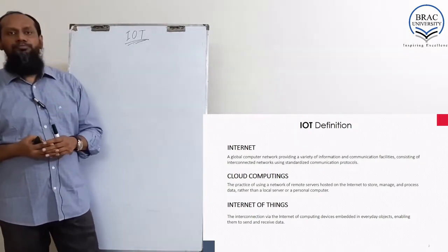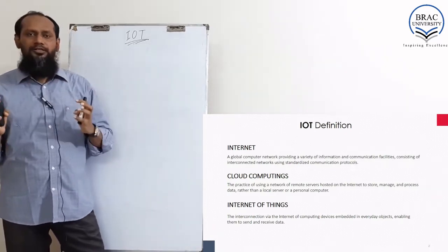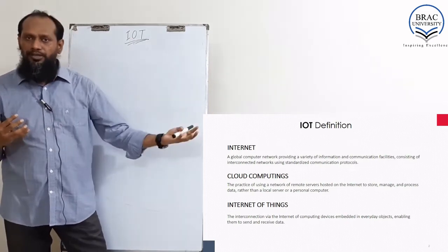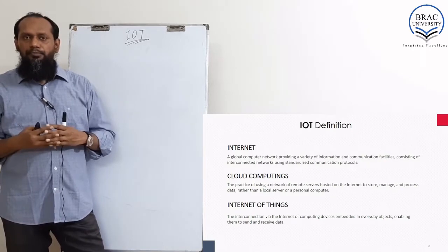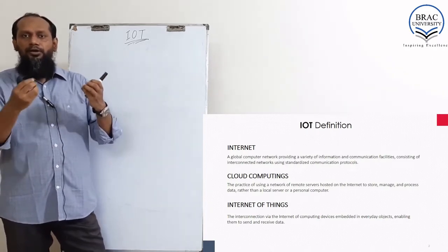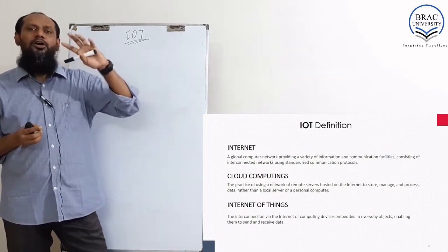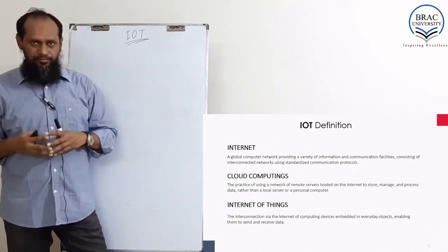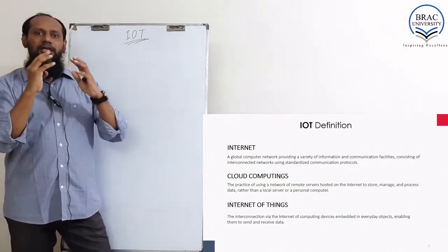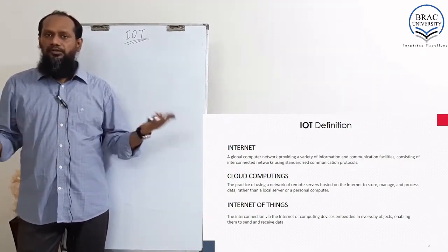The second thing is cloud computing. Cloud computing gives us services from remote. For example, I cannot afford a big software, but I can rent it. Like with Microsoft Office — instead of buying it outright, I can use Microsoft Word, Excel, or PowerPoint and pay per use, like a prepaid mobile phone. I am paying as much as I am using — that's the pay-per-use model. It can be hardware or software.